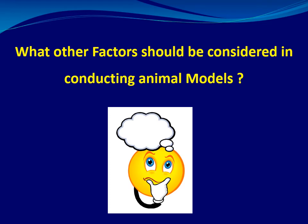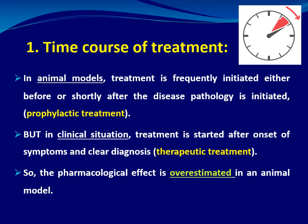Another factor is the time course of treatment. In animal models, treatment is frequently initiated before or shortly after disease pathology — making it prophylactic rather than therapeutic. In clinical situations, treatment starts after onset of symptoms and clear diagnosis. This discrepancy can lead to overestimation of pharmacological effects in animal models, highlighting a source of translational gap.